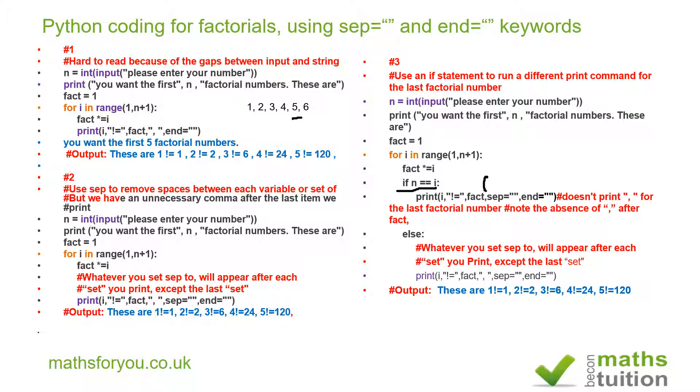You can see there's a comma after the word 'fact'. As long as i is between one and four, the gap is there and I'm going to have a comma. As soon as i is five, we print the last number 120 without a comma there.